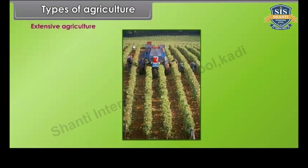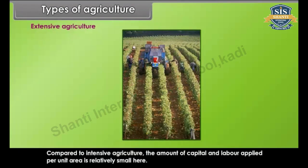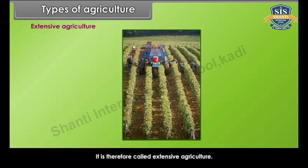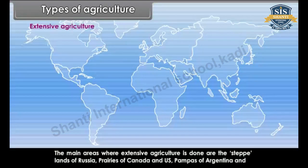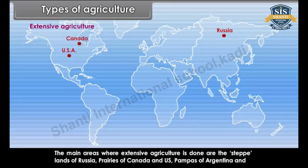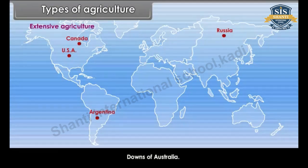Compared to intensive agriculture, the amount of capital and labor applied per unit area is relatively small in extensive agriculture. The main areas where extensive agriculture is done are the steppe lands of Russia, prairies of Canada and the US, pampas of Argentina and downs of Australia.